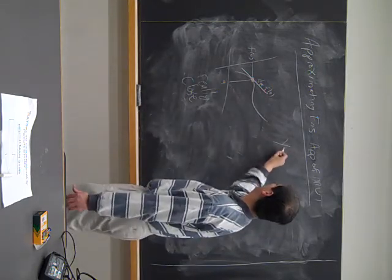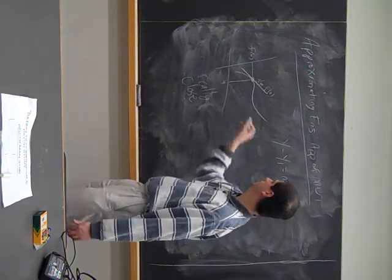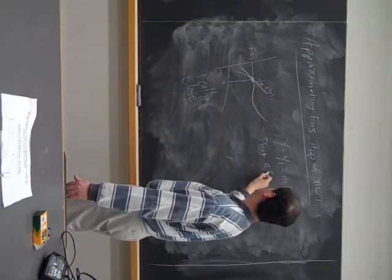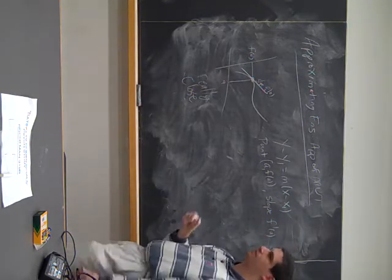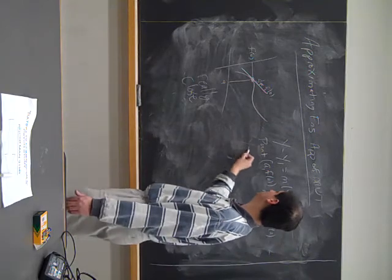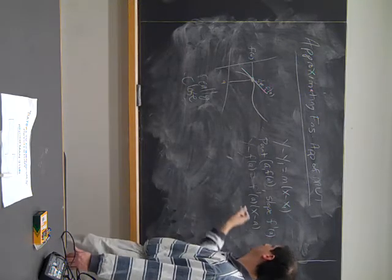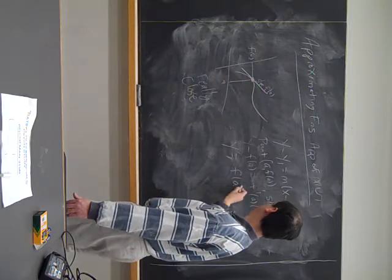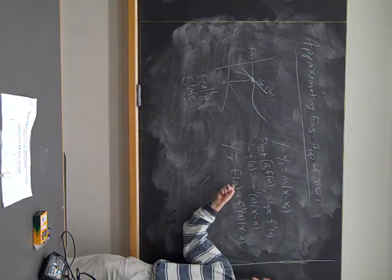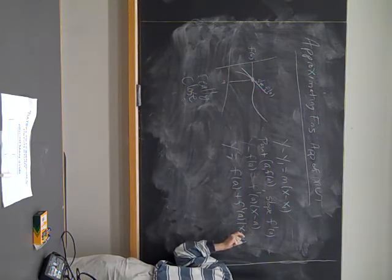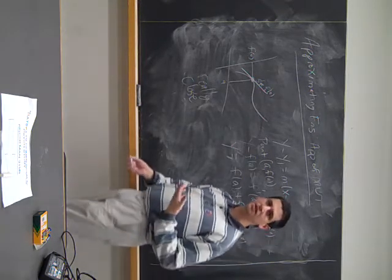So let's draw the tangent line. Now, y minus y1 is mx minus x1. And so we have the point a, f of a, and we have the slope f prime of a. So using this information, we get the tangent line is y minus f of a is f prime of a times x minus a. A much better way of writing this is y is f of a plus f prime of a times x minus a. This is where I start at time a. This is the elapsed time, and this is assuming my speed is constant.